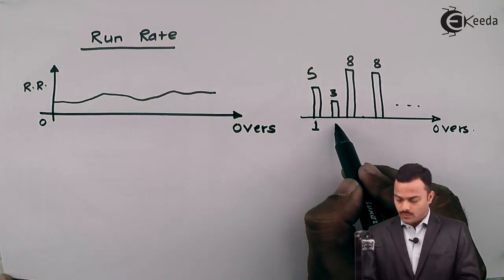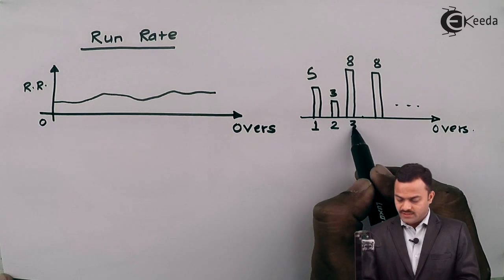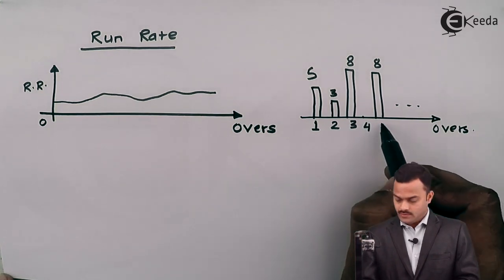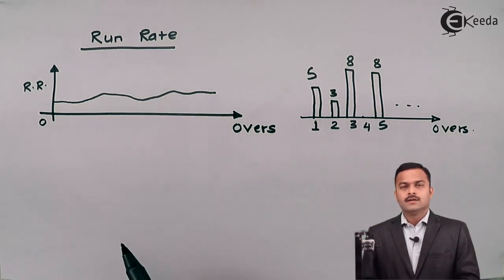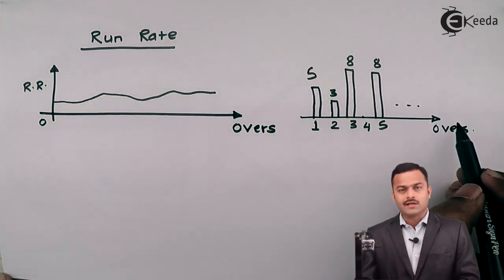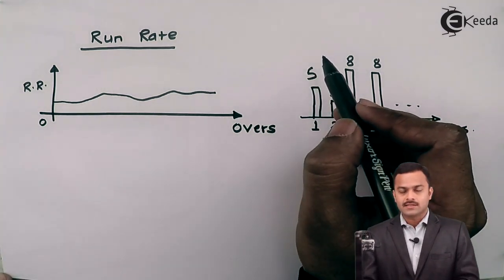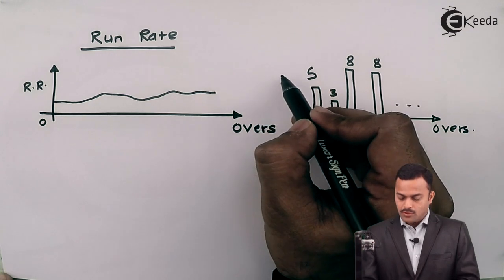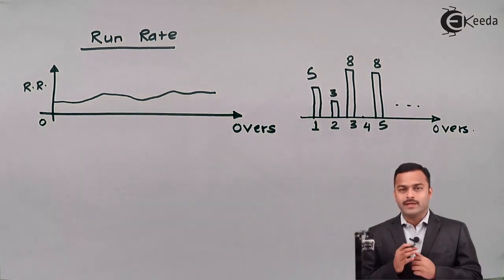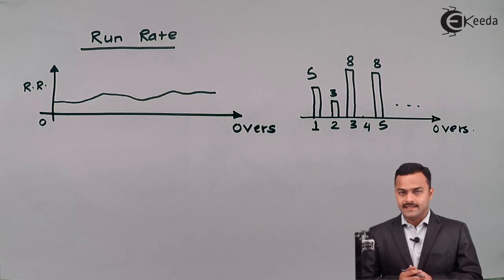And let's check - this is over number one, two, three, four is a maiden over, five like this. So here I'm having overs and on y axis I'm having number of runs scored. So that can also be considered as a signal.